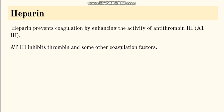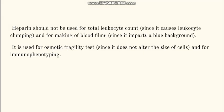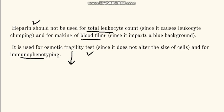Now the second anticoagulant is heparin. Heparin acts by enhancing the activity of antithrombin 3, which inhibits thrombin, and this way it acts as an anticoagulant. Heparin is used for osmotic fragility tests, as it doesn't alter the size of cells — osmotic fragility test is used for hereditary spherocytosis. It is also used for immunophenotyping. Heparin should not be used for routine hematological investigations, not for total leukocyte count or cell counts, and not for making blood films as it gives a bluish background.